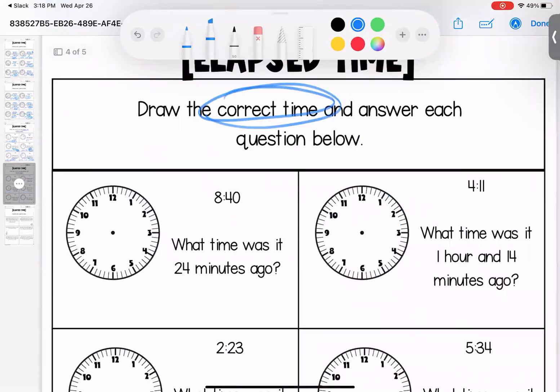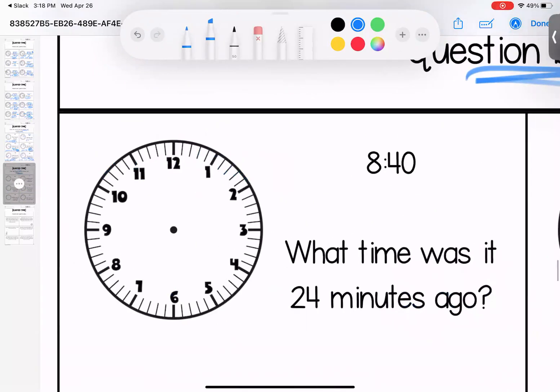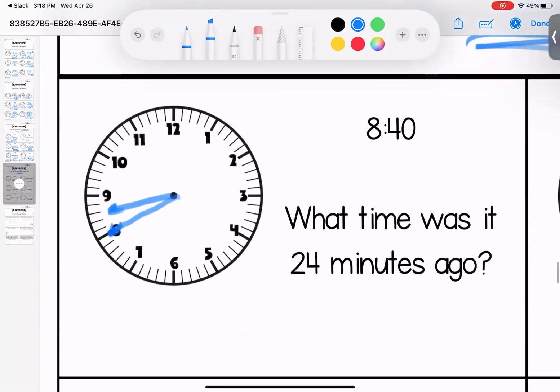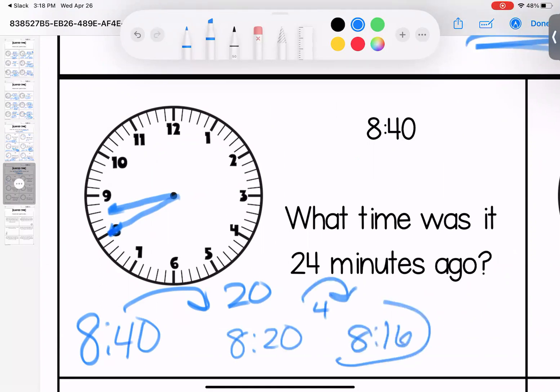All right, this page we're still drawing the correct time and answering the question, but we are looking at past time, so subtracting. It's 8:40. What time was it 24 minutes ago? So if we're at 8:40 and we take off 20 minutes, that's 8:20, and then we need to take off four more minutes, which would be 8:16.